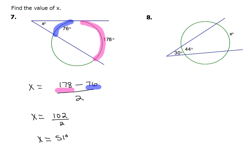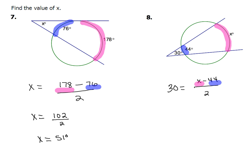In example number 8, same idea, but this time x is going to be either the inside or the outside arc, so there's one more step. We set up: 30 degrees equals x minus 44, divided by two. Double both sides: 60 equals x minus 44. Add 44 to both sides and you get 104 degrees for the value of x — that's the measurement of the outside arc. The setup is the key thing; after that it's just arithmetic.